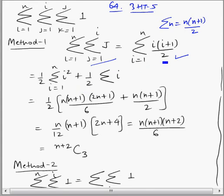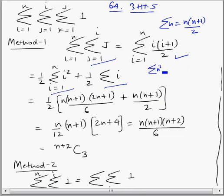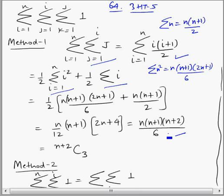We break this into two parts and apply the sigma n² formula and the sigma n formula. The sigma n² formula is n(n+1)(2n+1)/6. Simplifying this gives us n+2C3.